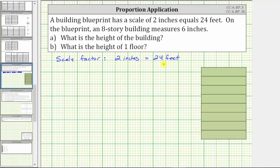And now we'll form a proportion where we set two ratios equal to each other to determine the height of the building. The first ratio is from the scale factor, two inches to 24 feet. So two inches to 24 feet...